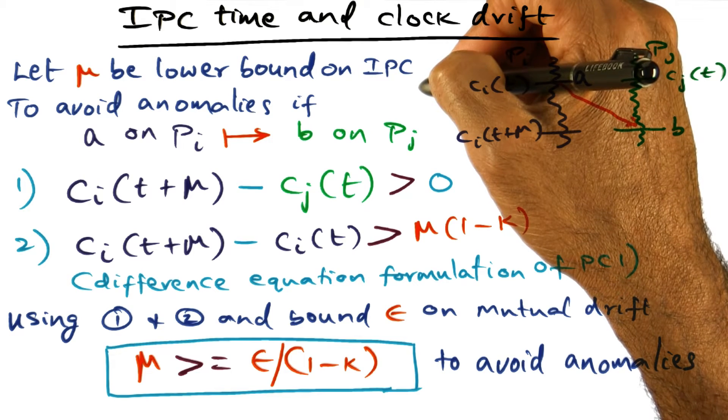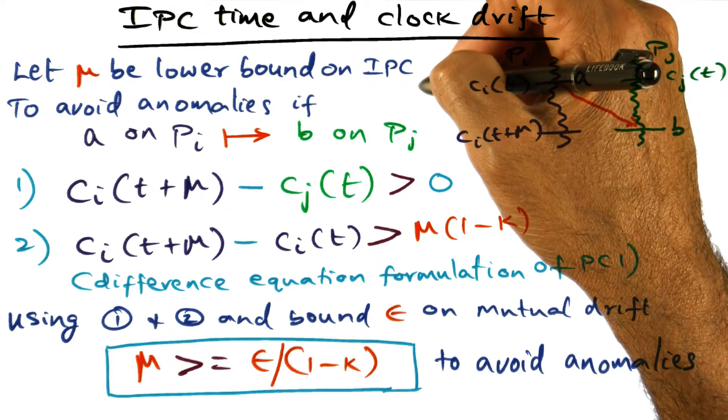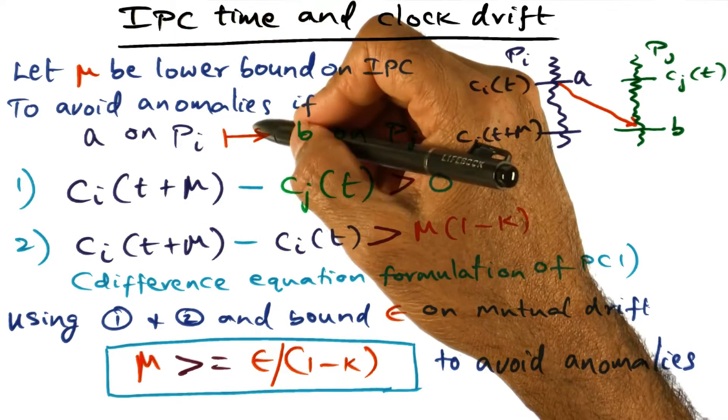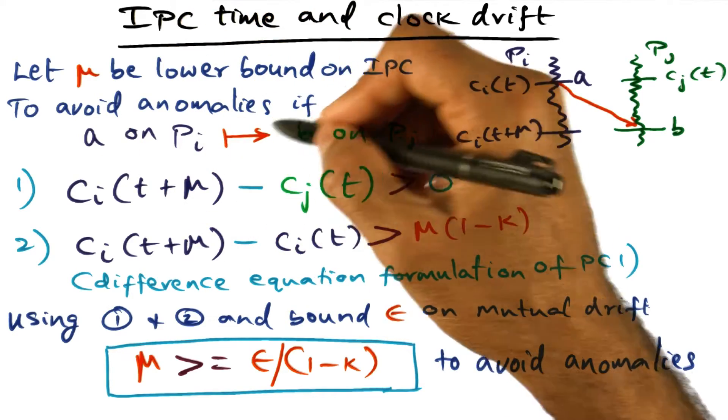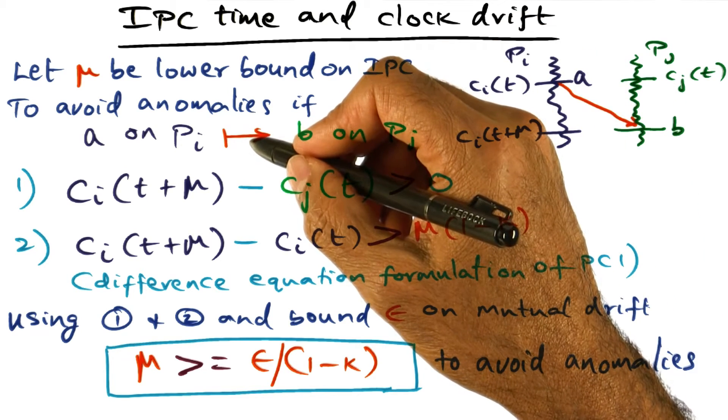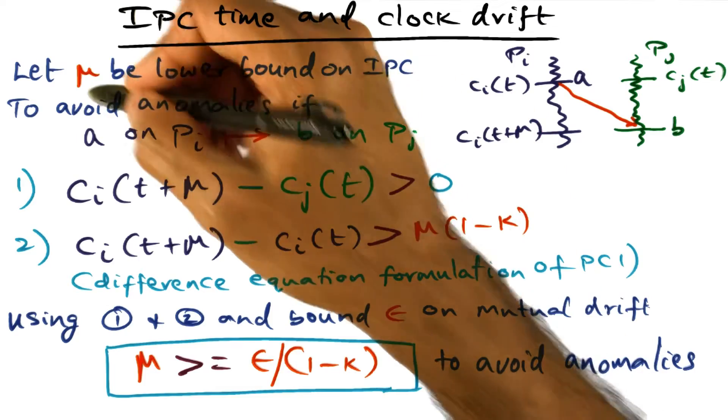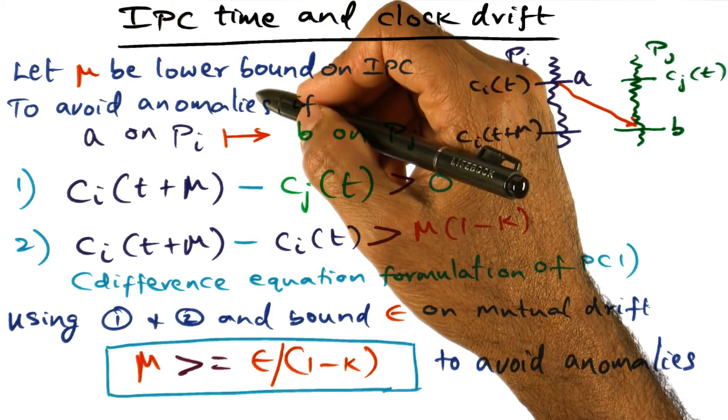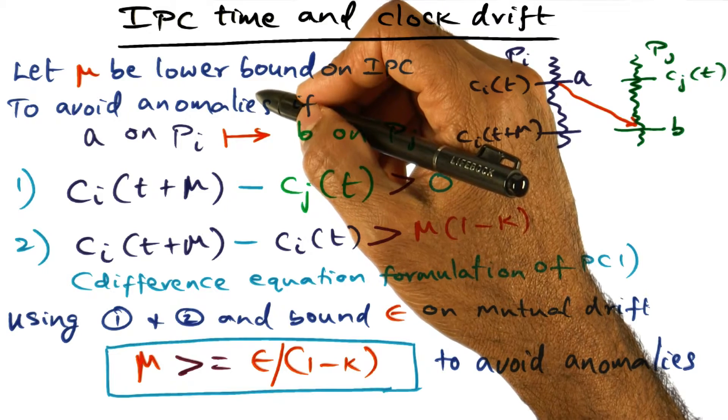So let's now derive the conditions under which we can assert that if we have an event A on Pi and in real time it's supposed to precede an event B on Pj, what are the conditions that should hold in terms of mu, k, the individual clock drift time, and epsilon that is the mutual clock drift time.